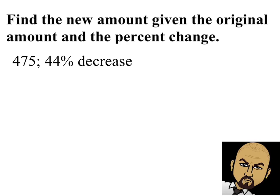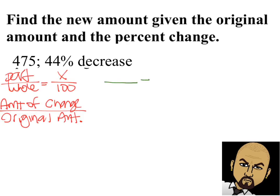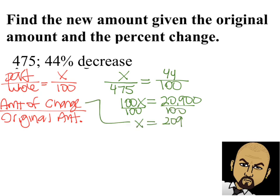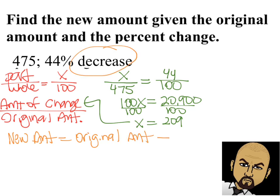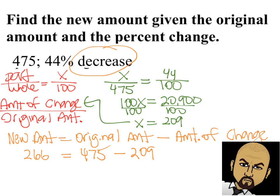Let's do another example. The original amount is 475 and the percent decrease is 44%. Using the same formula — amount of change divided by original amount equals the percent — we set up our proportion: 44 hundredths, original amount 475. We cross multiply and get 100x equals 20,900. Divide both sides by 100 and x equals 209. But that is the amount of change, not the new amount. Because it is a decrease, we subtract the amount of change from the original amount: 475 minus 209 gives us a new amount of 266.